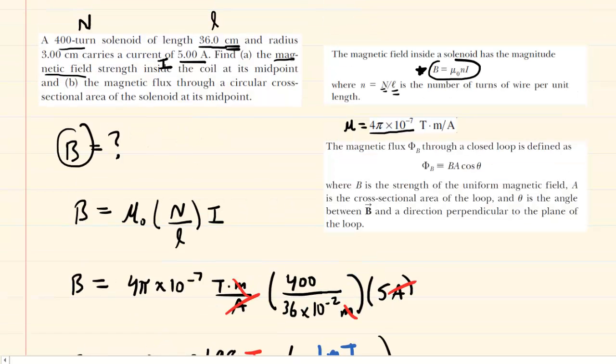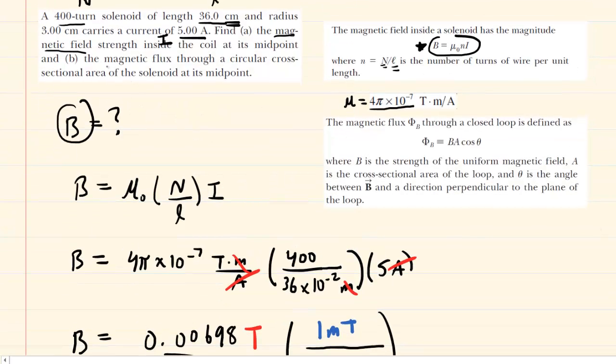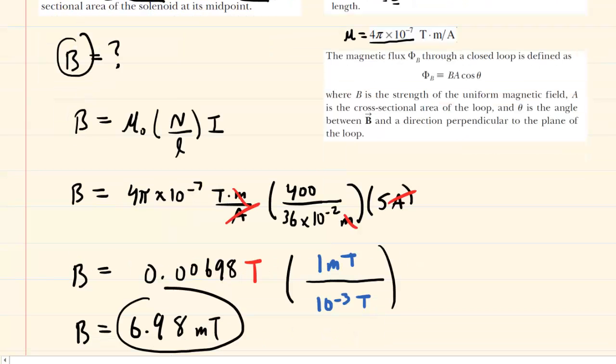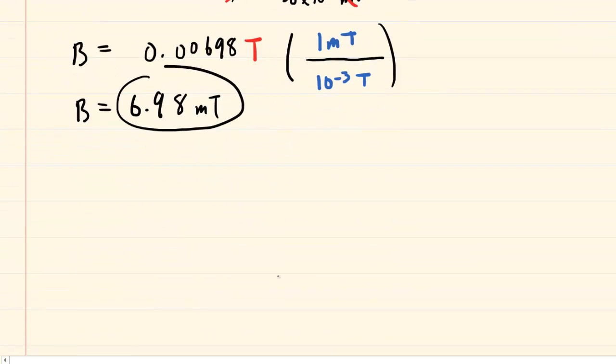In part B, we are asked to determine the magnetic flux through a circular cross-sectional area at the midpoint of the solenoid. In this chapter, we have learned that magnetic flux, which is symbolized by this Greek letter with subscript B, is equal to the magnetic field times the area times the cosine of an angle. This is part B.